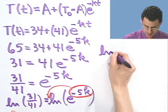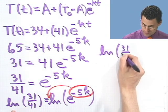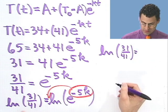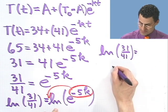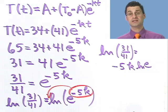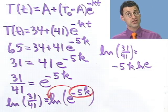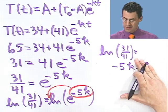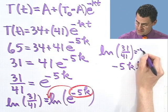I see the natural log of 31 over 41 equals, well, minus 5k times the natural log of e. But what's the natural log of e? Well, the natural log of e is just 1. So, in fact, that term goes away, so I see this just equals minus 5k.